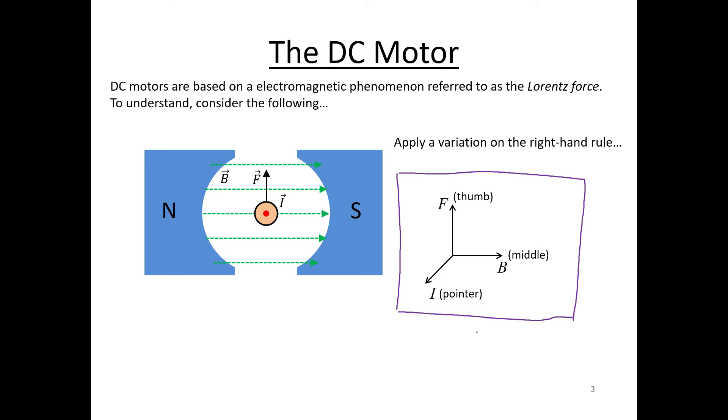Once you have that set, you just need to twist your hand around until you've got your pointer and middle finger in the direction of the current and the field, and then your thumb will naturally point in the direction that the force is on that current carrying wire.